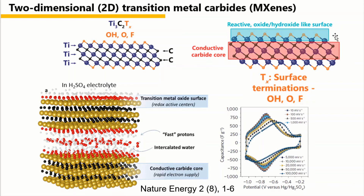When using MXene in a supercapacitor, especially in sulfuric acid electrolyte, the MXene supercapacitor shows very high capacitance due to surface redox reactions between the intercalated proton and the surface oxygen. In aqueous electrolyte, MXene is able to deliver a capacitance of up to 1,500 F per cubic centimeter.